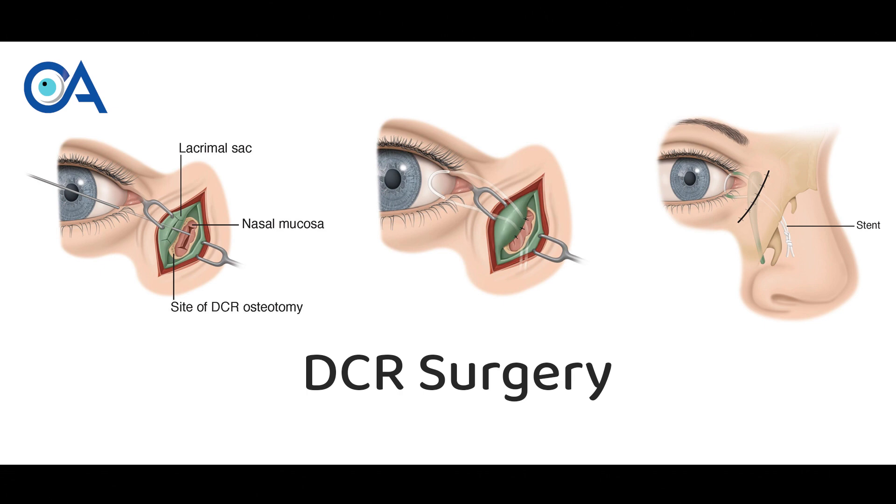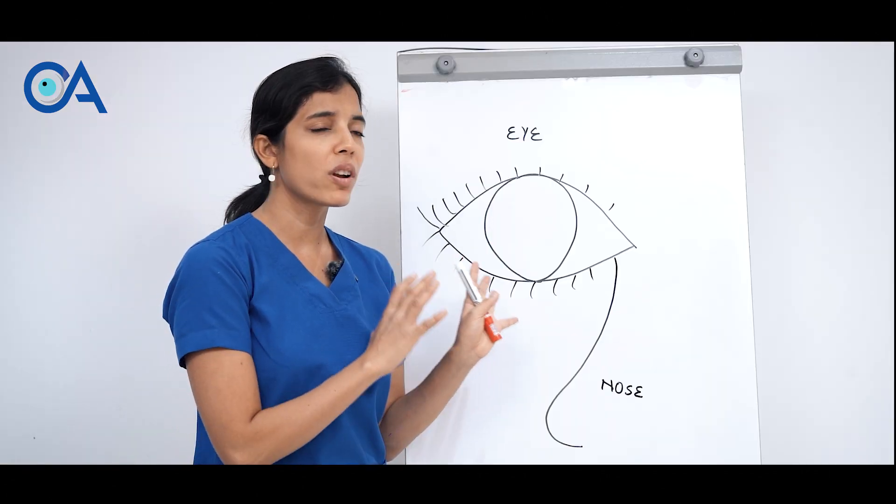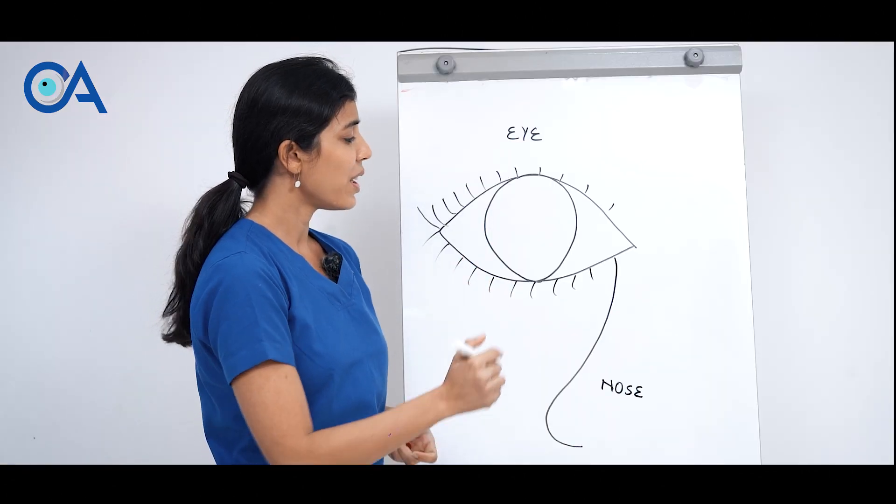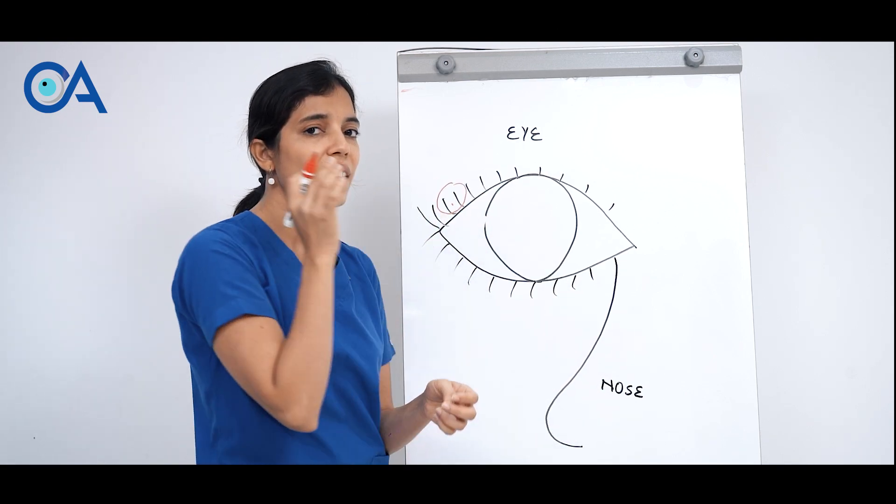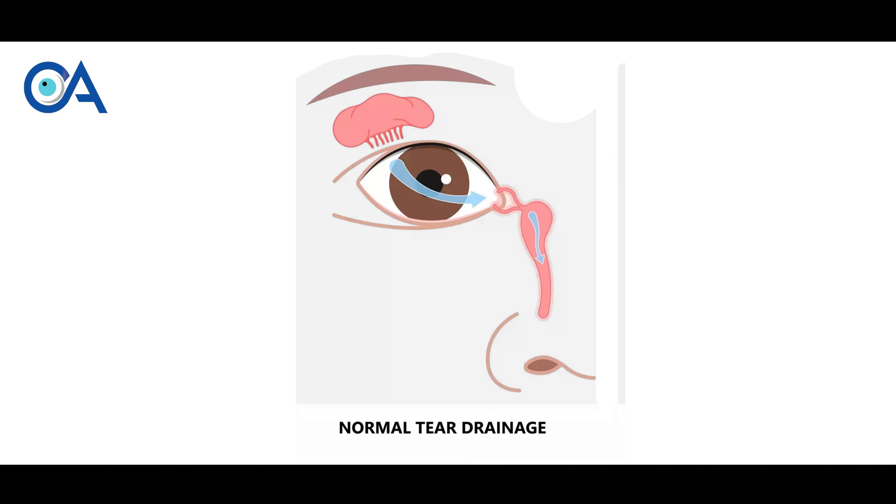First to understand the problem, you should know what is normal. So if this is our eye and this is our nose, normally from the side of the eye our normal tears are produced.